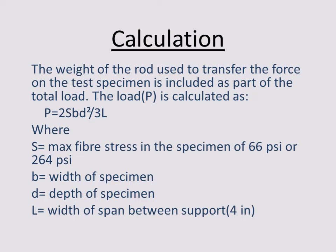To calculate the Heat Deflection Temperature, the weight of the rod used to transfer force on the test specimen is included as part of the total load. The load P is calculated as: P = 2SBD² / 3L, where S is the maximum fiber stress (66 psi or 264 psi), B is the width of the specimen, D is the depth of the specimen, and L is the span between supports, which is 4 inches.